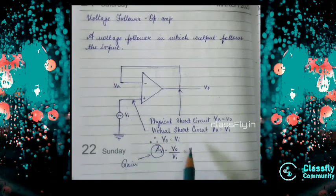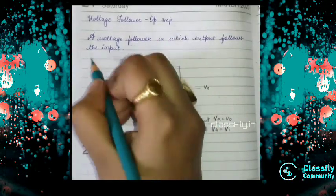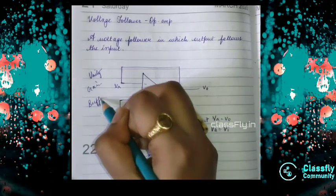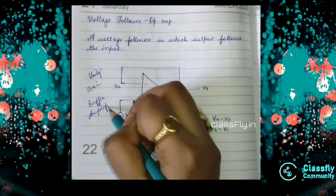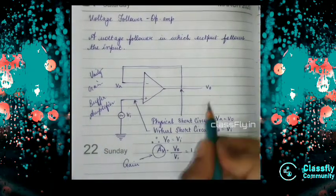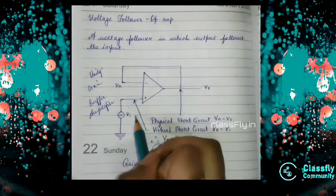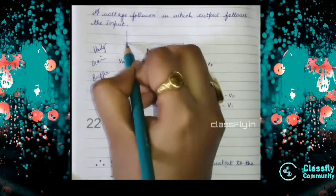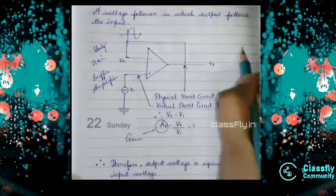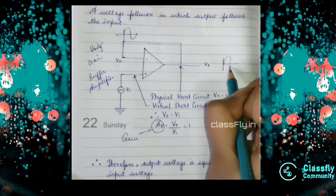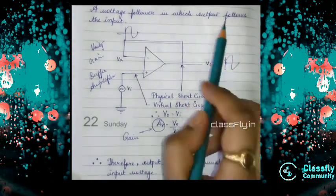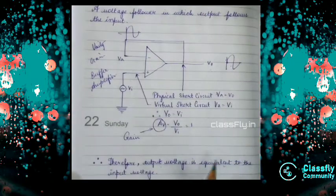Now we will see the gain AV is equal to V0 by VI. So V0 is equal to VI. We also call this voltage follower as unity gain amplifier or buffer amplifier. As V0 is equal to VI, we are getting one, that's why we know it as the unity gain buffer amplifier. When VI is equal to V0, output voltage is equivalent to the input voltage. This is basically what voltage follower does.